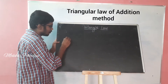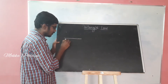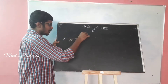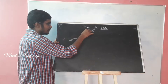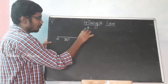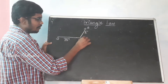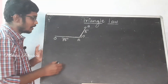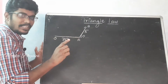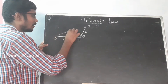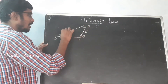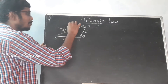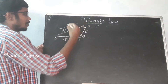So, what do you do now? You consider two vectors. OA represents the A vector and AB represents the B vector. If you want to add two vectors, the angle between them is theta. The result is the addition of the two vectors — it is the closing side of the triangle. This is the R vector, that is nothing but A vector plus B vector. The angle of the resultant is alpha.